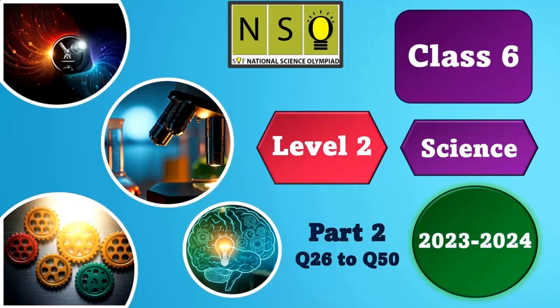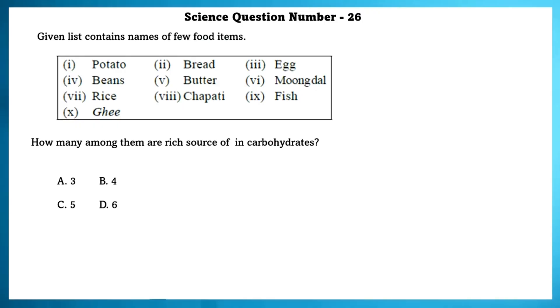Class 6, SOF-NSO level 2. Science question number 26. Given list contains a few food items, how many among them are rich source of carbohydrate? Potatoes, rice, bread and chapati are rich sources of carbohydrates.